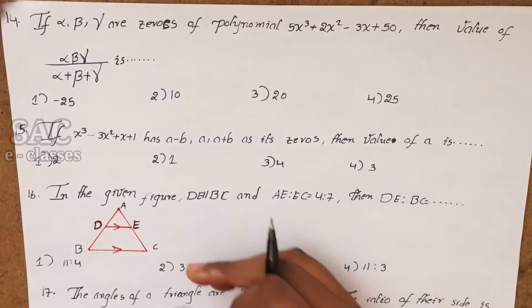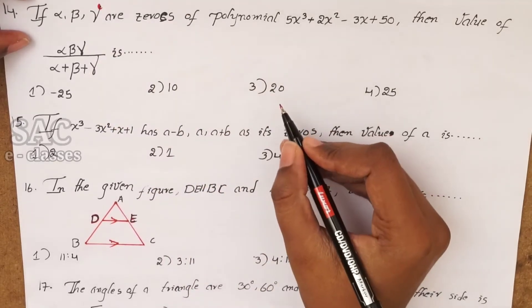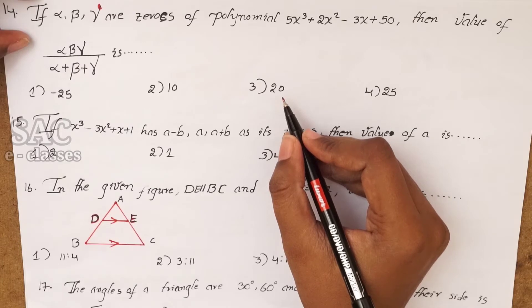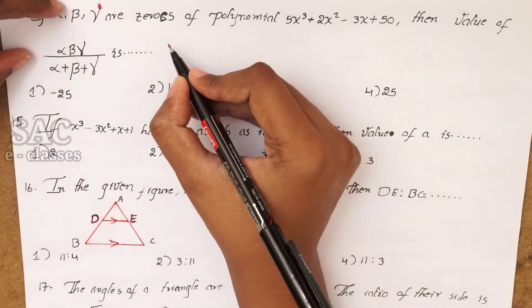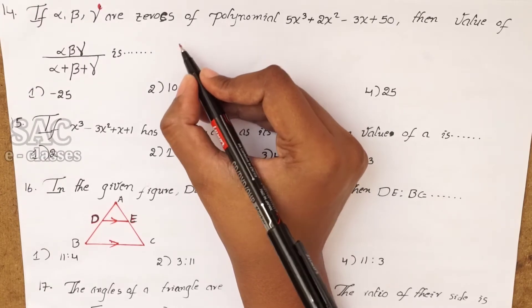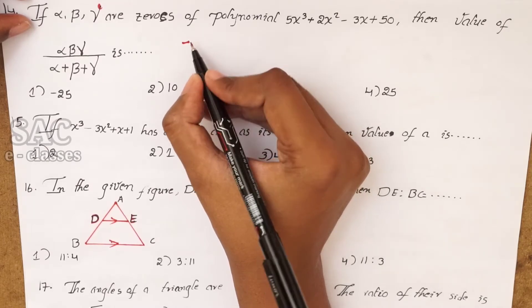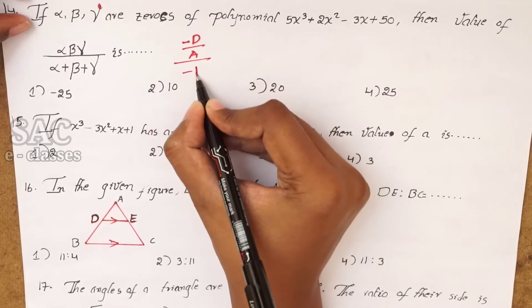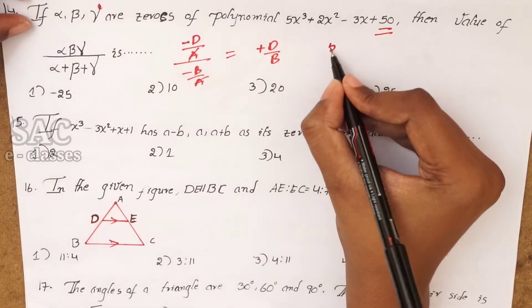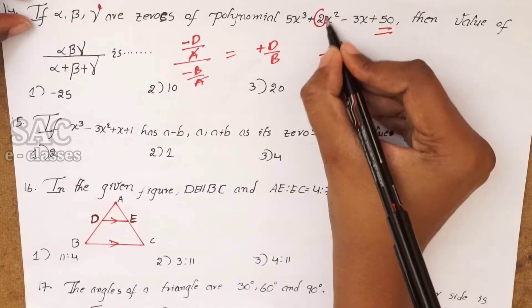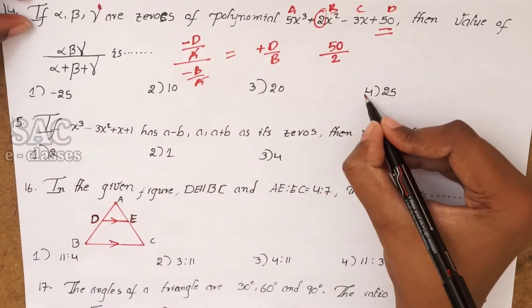Problem 14: if α, β, γ are the zeros of the polynomial 5x³ + 2x² − 3x + 50, find αβγ/(α+β+γ). Product of zeros = −D/A and sum of zeros = −B/A. So the expression = (−D/A)/(−B/A) = D/B = constant term / x² coefficient = 50/2 = 25.